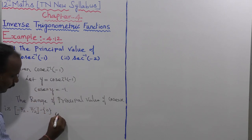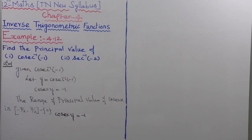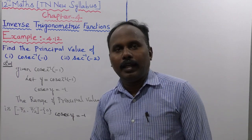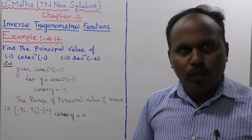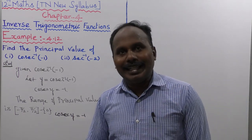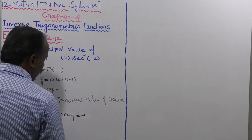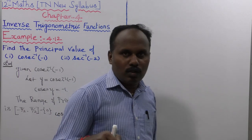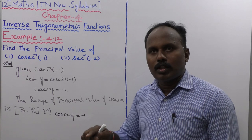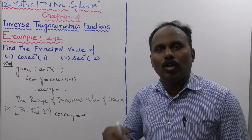Now, cosecant y is equal to minus 1. Since cosecant means the inverse of sin, sin of pi by 2 equals 1, and sin of minus pi by 2 equals minus 1. The reciprocal of minus 1 is minus 1, so minus 1 divided by minus 1 gives sin inverse of x equal to minus 1, which means cosecant inverse of x is equal to minus 1.